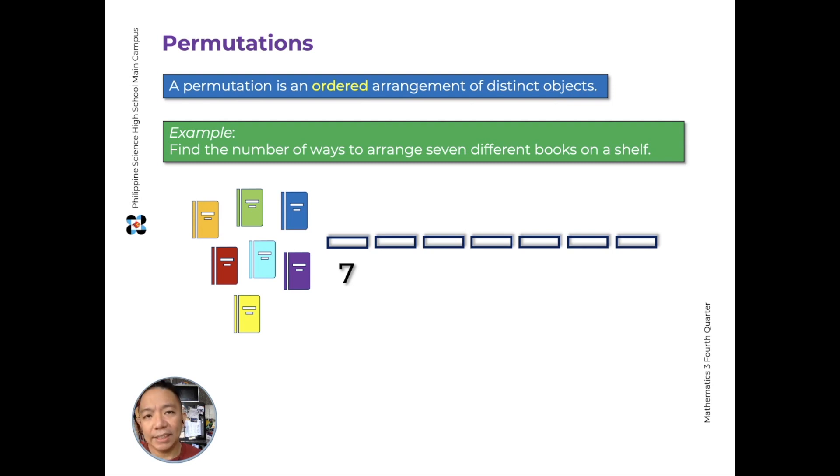So there are 7 possible ways of putting a book in that position because I have 7 books available. Since I've placed one book there, how many are left? Only 6. So for the second spot, I have 6 possible books I can place once the first book is fixed in the first position. Let's put down 6 here. For the third position, 5 books are possible. And so on for the remaining positions: 4 for the fourth position, 3 for the fifth, 2 for the sixth. And after that, only one book remains, so you have no choice.